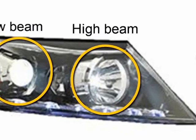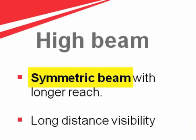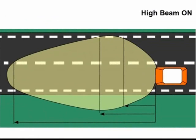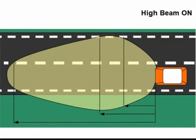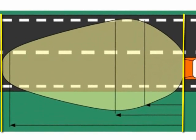Now let's go into the details of high beam and low beam. High beams are symmetric beams. This is the top view of the vehicle which is running on a road with high beam on. If you view the beam along the longitudinal axis of the car, you'll observe that the beam is exactly symmetric.